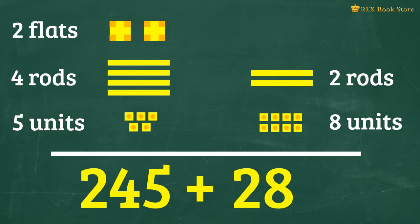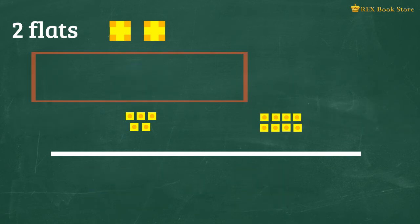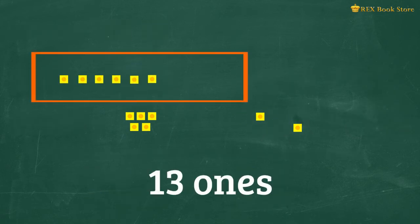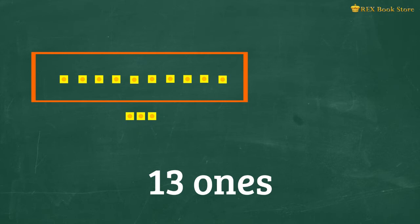We put these together by starting with the units, or the ones, first. 5 ones plus 8 ones is equal to 13 ones. We have to regroup this to form 1 ten and 3 ones.